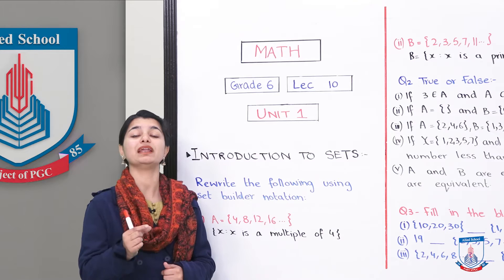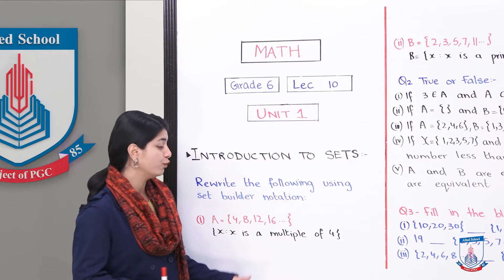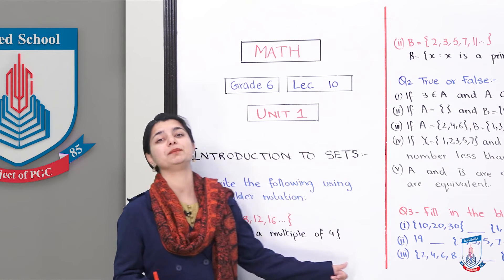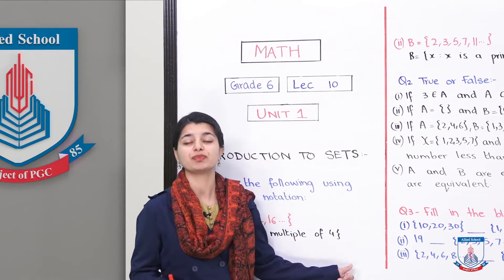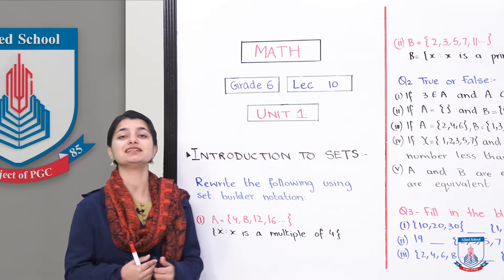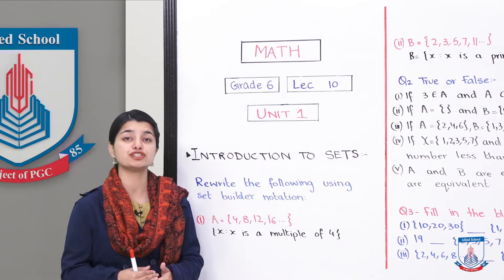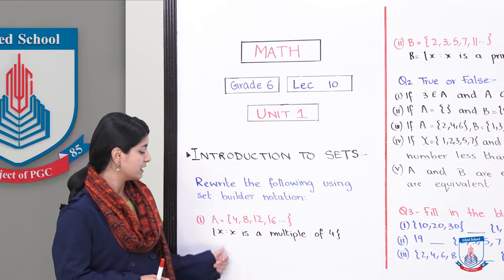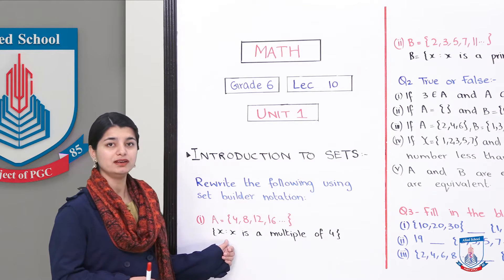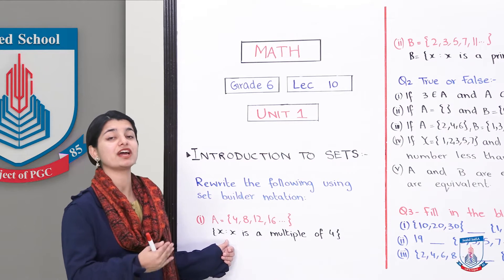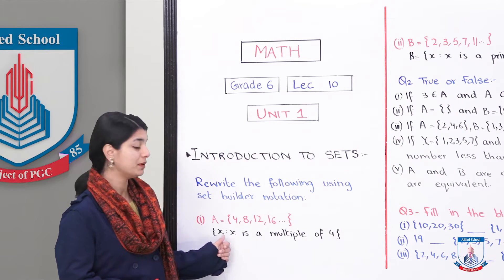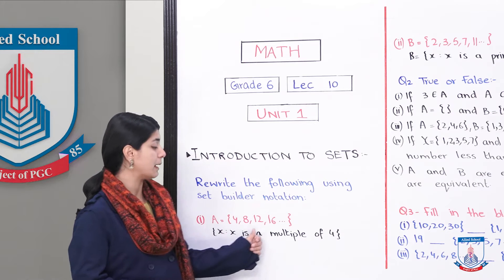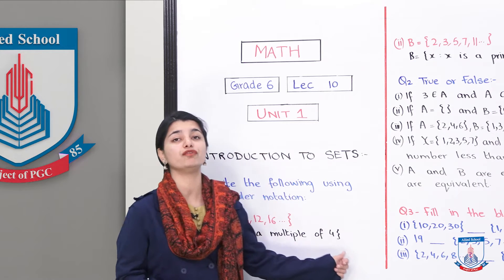So we write the set builder notation form. We write: X semicolon, as it has been shown, X is a multiple of 4. So the value of X follows this rule, and this is how you write the set builder notation for part A.